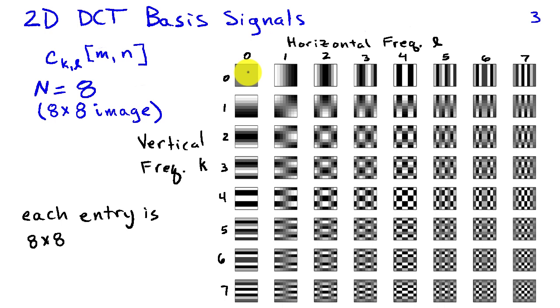So in this first column, we're seeing the vertical cosines. And in the first row, we're seeing the horizontal frequency cosines. And then in the other entries, we're seeing products of these different horizontal and vertical frequency cosines, with the lower right corner being the product of the highest frequency horizontal and vertical cosine.